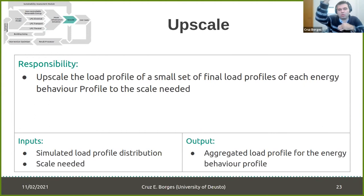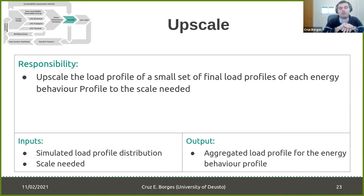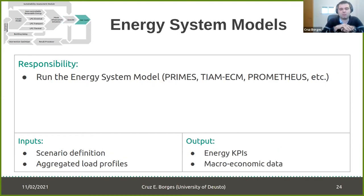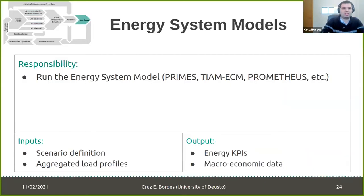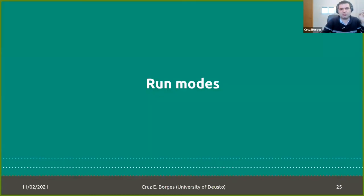When all of this is complete, we obtain a distribution of final load profiles for each behavioral type. The upscaling step takes this distribution and, using bootstrapping or other statistical methods, scales a single profile to create thousands or millions of units. These are then aggregated to create the load profile useful for energy system models, which need the consumption profile per energy type along with the rest of the carried information.